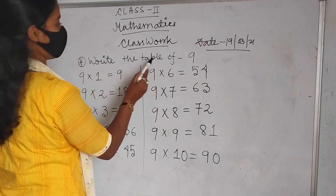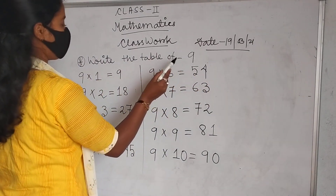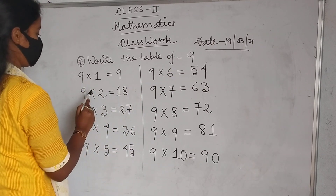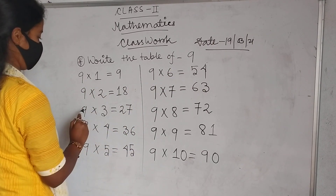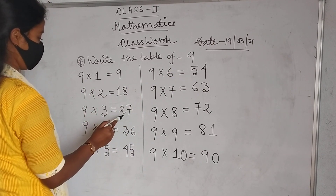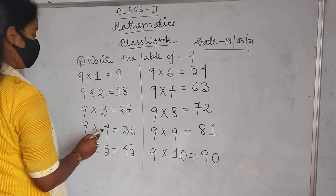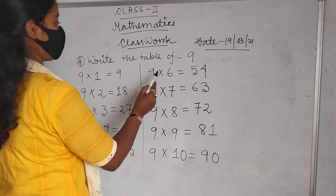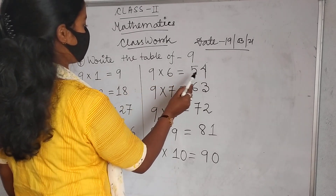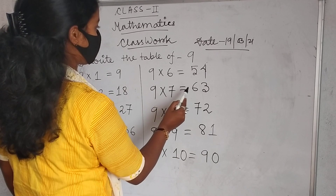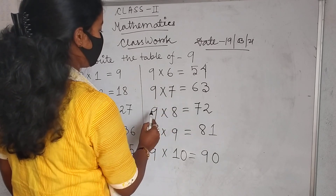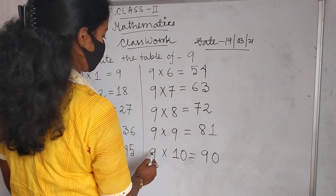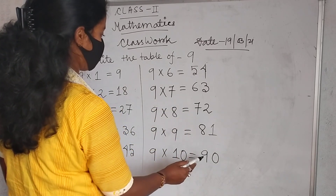Let's write the table of 9. Table 9: 9 1s are 9, 9 2s are 18, 9 3s are 27, 9 4s are 36, 9 5s are 45, 9 6s are 54, 9 7s are 63, 9 8s are 72, 9 9s are 81, and 9 10s are 90.